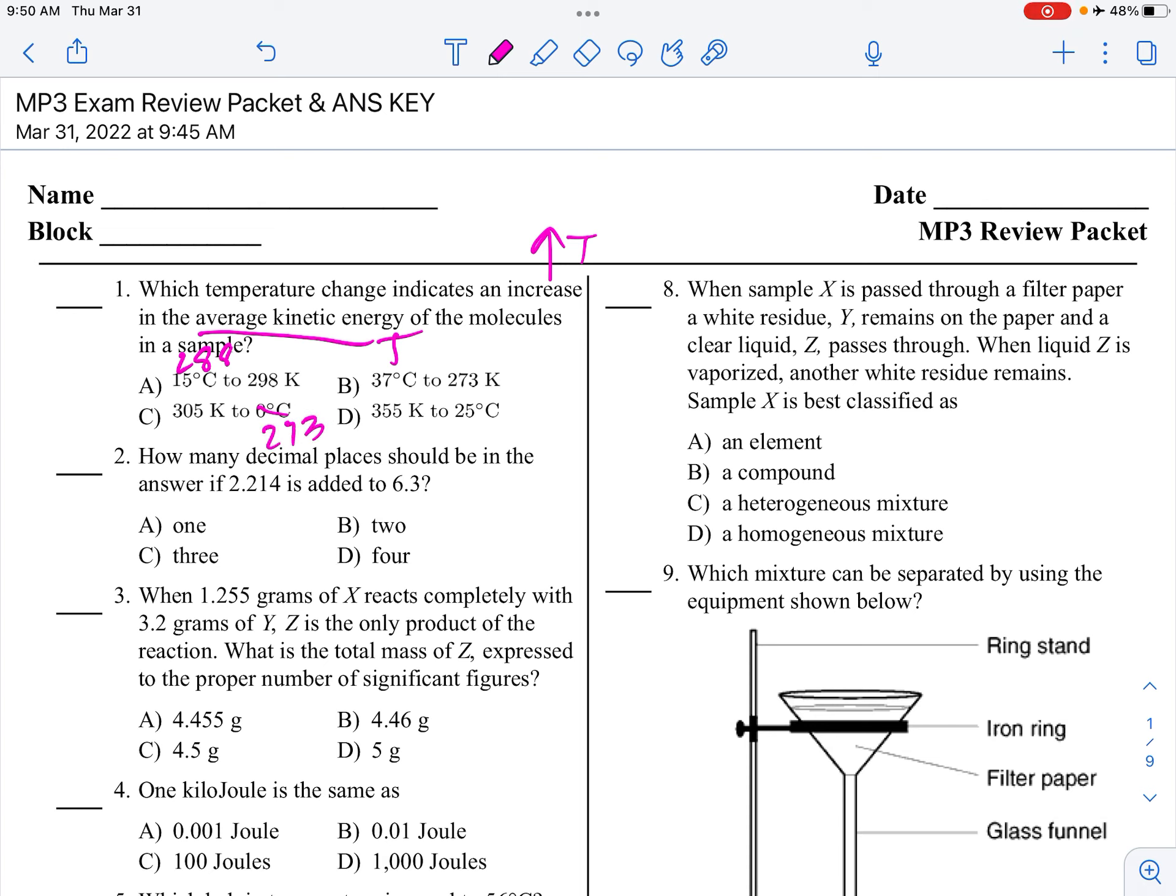Zero, this is 273, so that goes down. 37 plus 273 is 310, so that goes down. And 25 plus 273 is 298. That goes down. So yes, you want the increase.